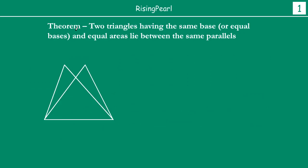First, like we always do, we are going to learn a little bit more about the theorem so that we understand exactly what it is telling us, and it will help us prove it. We have drawn two triangles with the same base. Let us call this triangle ABC and the other triangle DBC. So ABC is a triangle and DBC is a triangle. If you see, we have drawn these two triangles in such a way that the base of both triangles is BC — that is, they have the same base. And remember, they have the same area.